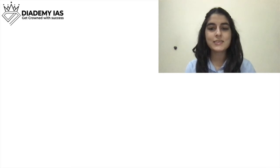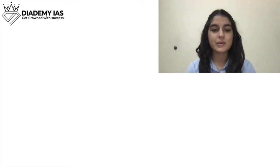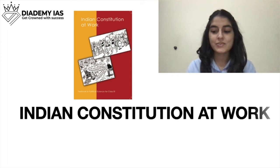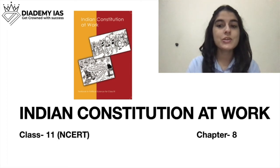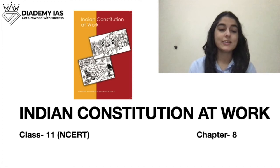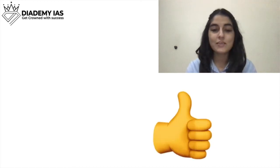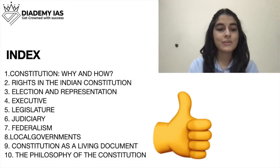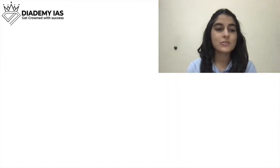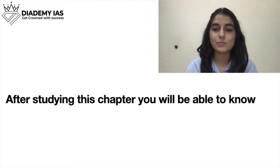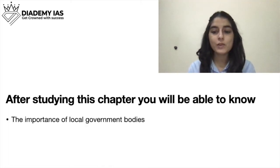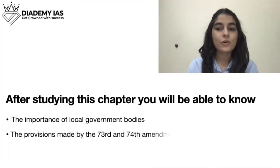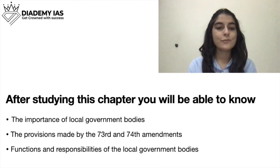Hello everyone, this class is presented to you by Diademy IES. In the previous classes we started Indian Constitution at Work, Class 11 NCERT, and we have covered almost seven chapters. In this class we will be covering Chapter 8. Let's have a look at the index - in total there are ten chapters, and today we will be covering Chapter 8: Local Governments. After studying this chapter you will be able to know the importance of local government bodies and the provisions made by the 73rd and 74th amendments.